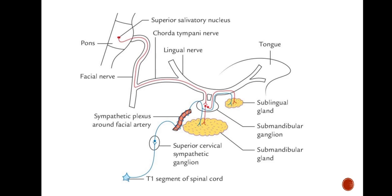To recap: the pre-ganglionic parasympathetic fibers arise from the superior salivatory nucleus, pass through the facial nerve, chorda tympani nerve, and lingual nerve, relay in the sub-mandibular ganglion, and give its branches. The sympathetic branches arise from the T1 segment of the spinal cord, relay in the superior cervical sympathetic ganglion, give post-ganglionic fibers, form a plexus around the facial artery, pass through the sub-mandibular ganglion, and give branches to the gland.